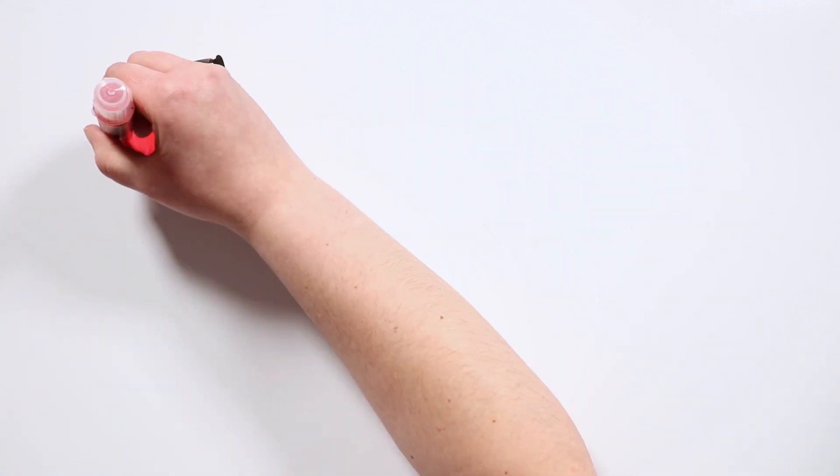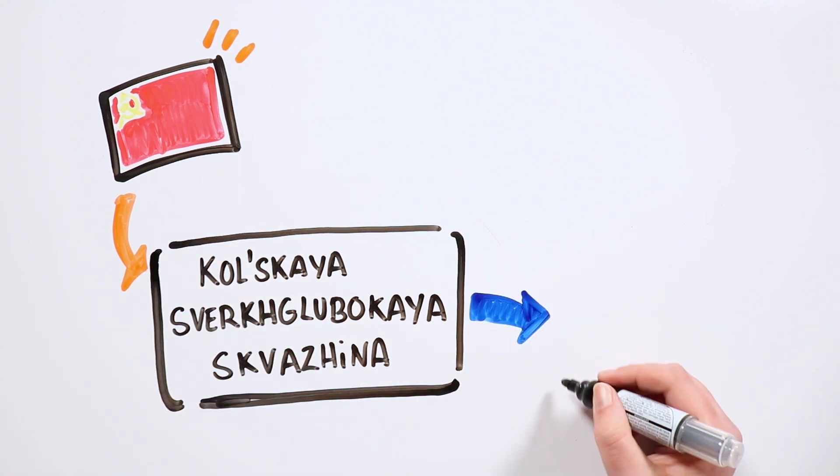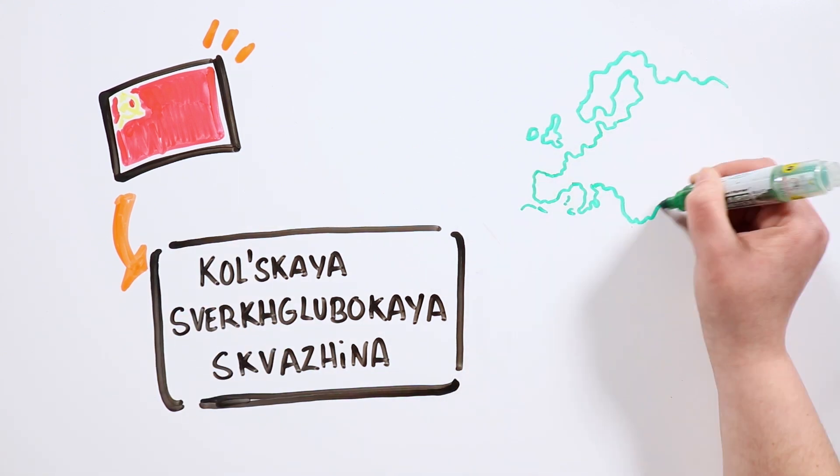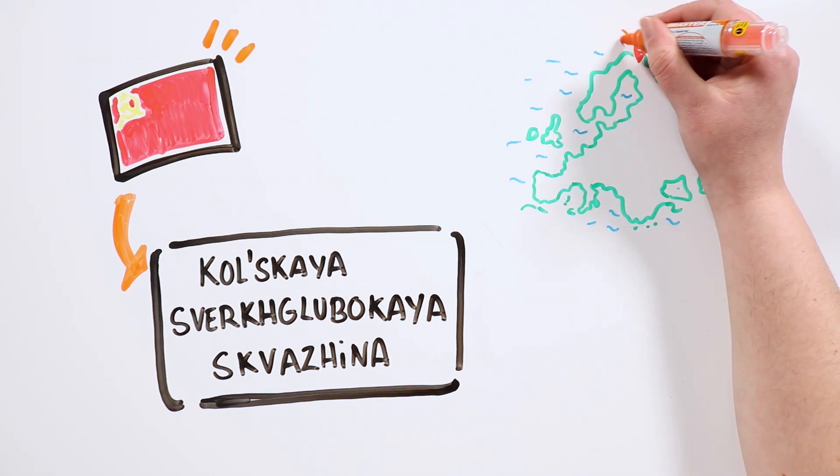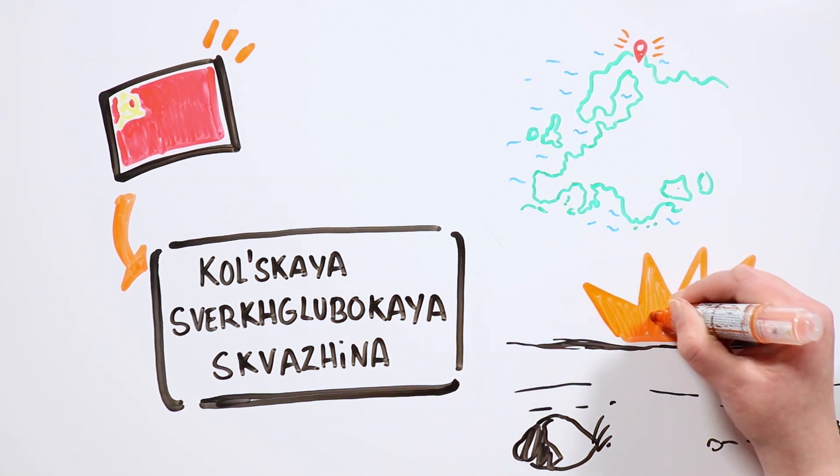But the Soviets did not give up so easily. Their project, the Kola Superdeep Borehole, was carried out on land, specifically in Murmansk, in the Baltic Shield area, a very flat region containing the oldest rocks in Europe.